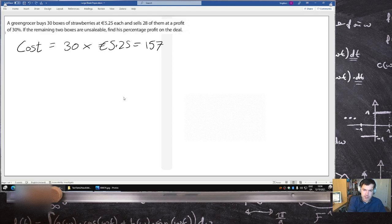I should put my euro symbol in. That's the cost. Now, 28 of them are sold at a profit of 30%.